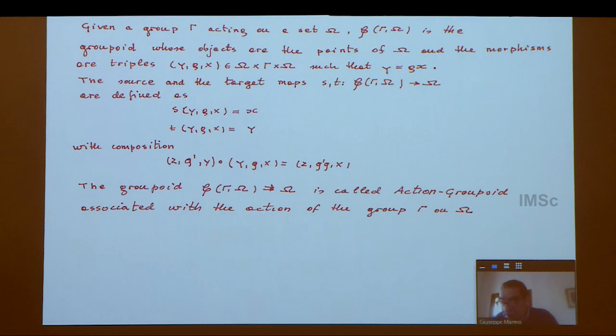To implement the dynamics, you need to introduce what is called an action groupoid, which is a quite general notion. Essentially, you define a groupoid by using a group which acts on a set plus two copies of the set.